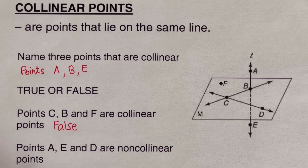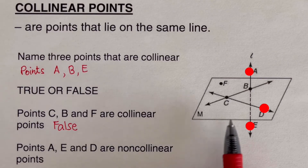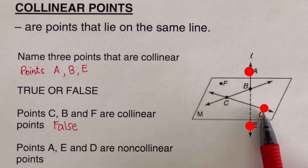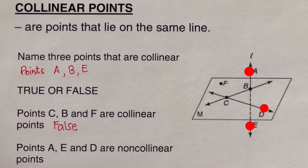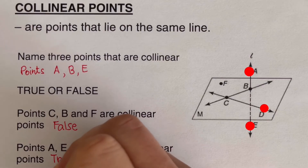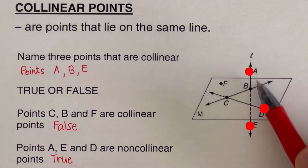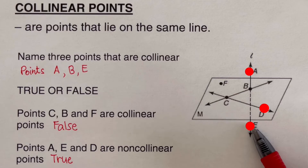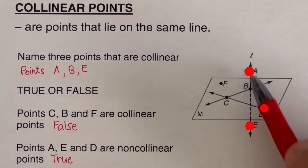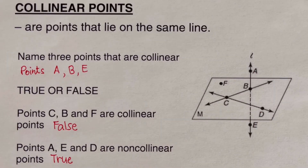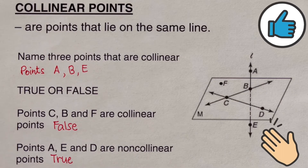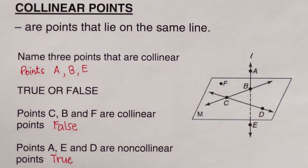Points a, e, and d are non-collinear. Non-collinear means they are not on the same line. This statement is true because only points a and e are collinear — they lie on the same line l — but d is a point off the line. Now let's move on to the next term: coplanar points.